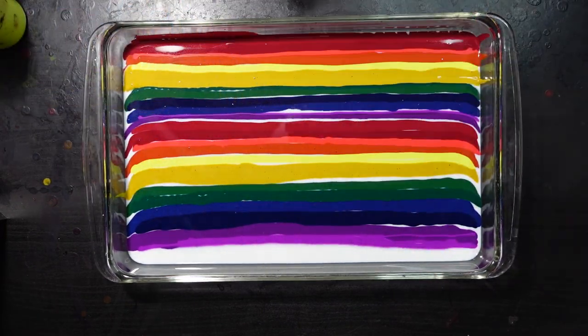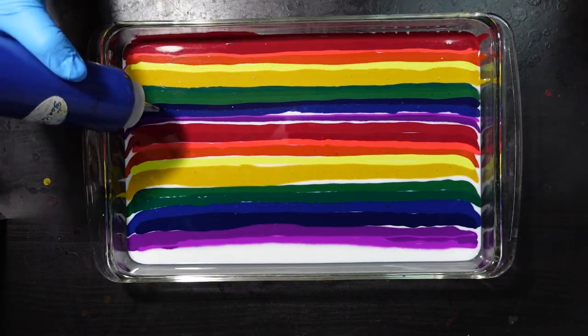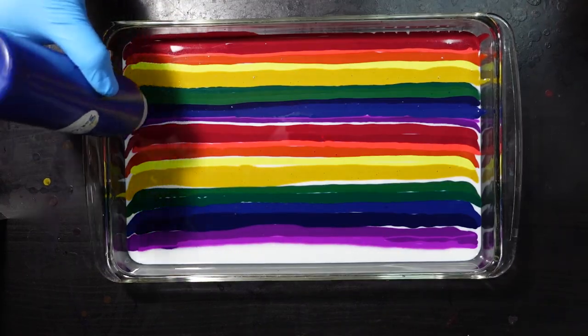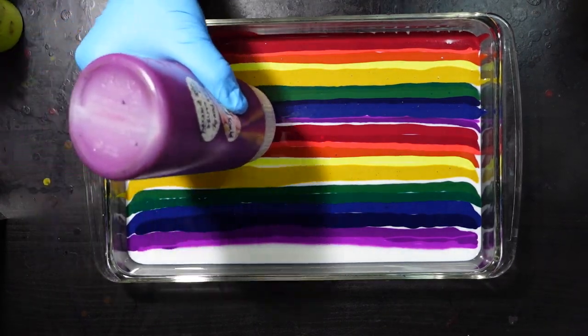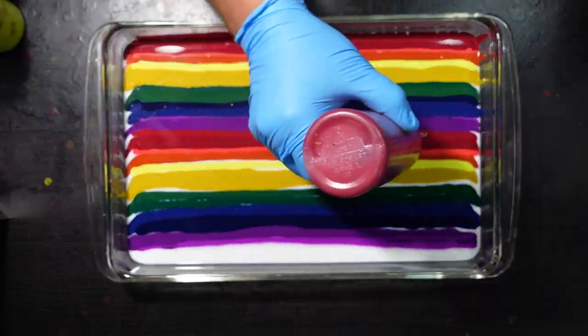And then after I'm done putting the stripes of color on, I'm gonna hit the top of the bed with a blow torch because I can see some bubbles. And that just happens when you shake up your mixture in the bottles, you get bubbles in it. So you gotta pop them.